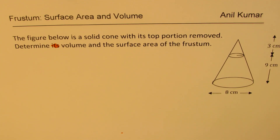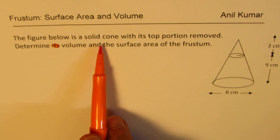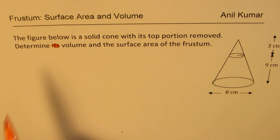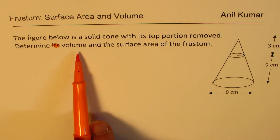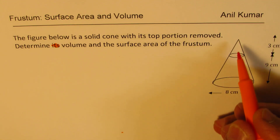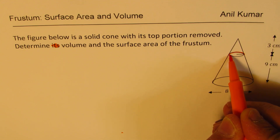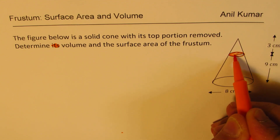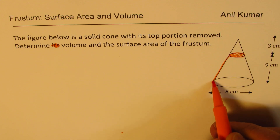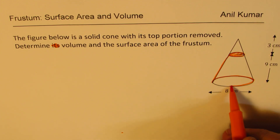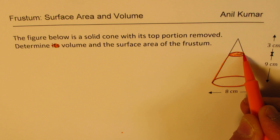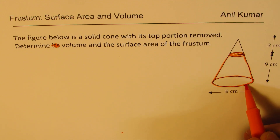I'm Anil Kumar. Welcome to my series on surface area and volume. In this video we will see how to calculate surface area and volume of a frustum. The question here is: the figure below is a solid cone with its top portion removed. Determine volume and surface area of the frustum. When you remove a portion of the cone from the top, what remains is called a frustum.